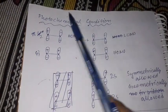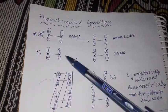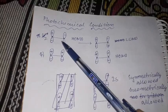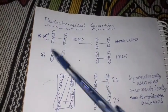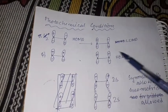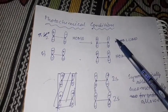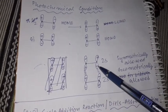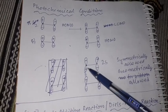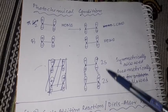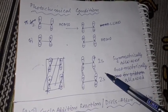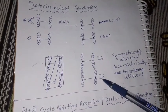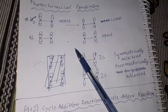Under photochemical conditions, one electron from the ground state psi 1 is promoted to the pi star orbital, making pi star the new HOMO of the first molecule. When this excited HOMO interacts with the LUMO of the second molecule, the minus lobe interacts with minus lobe and the positive lobe with positive lobe — both molecules react suprafacially. This supra-supra interaction is both symmetrically and geometrically allowed, so the 2+2 cycloaddition reaction occurs photochemically.